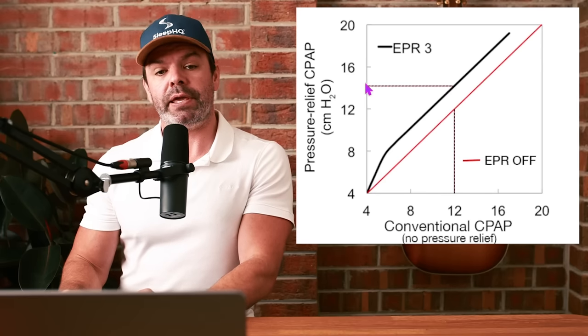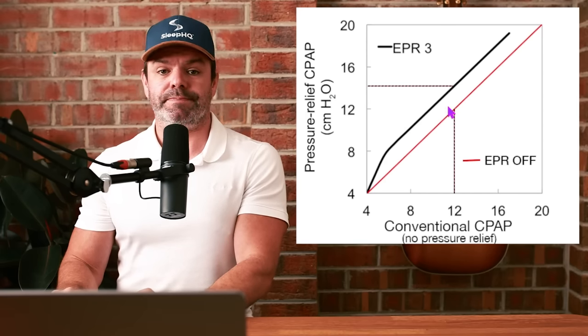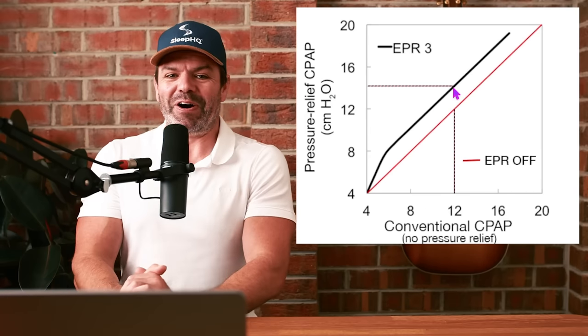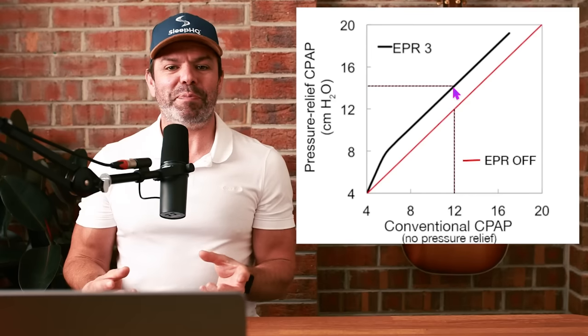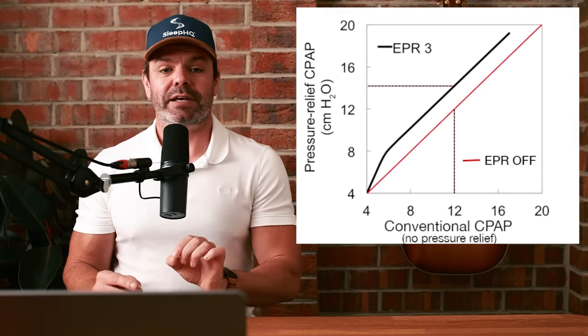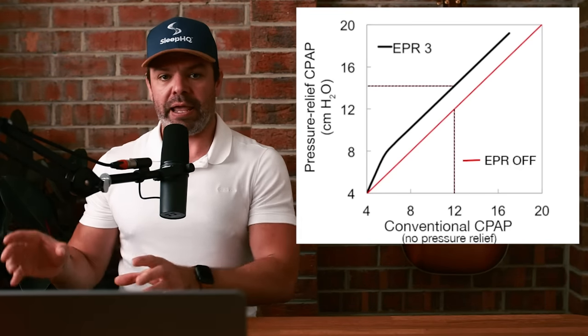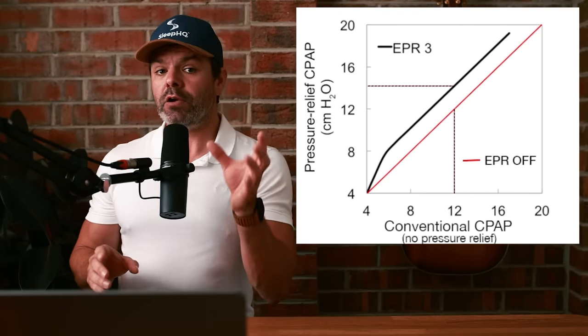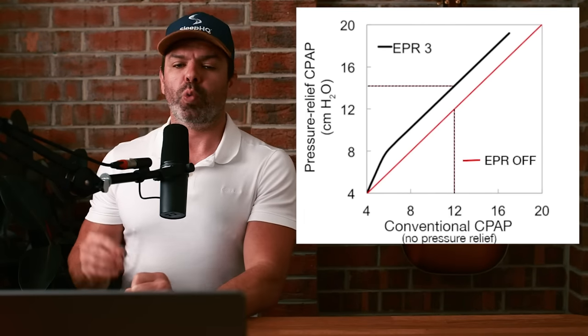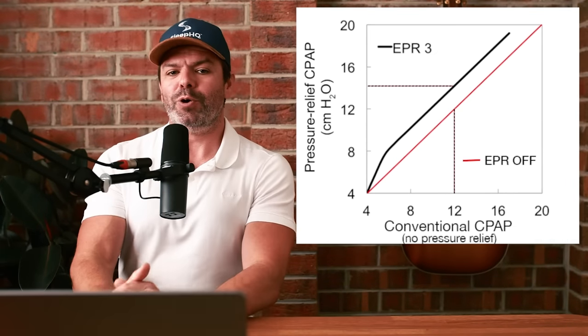If we turn on EPR to a level of 3, the pressure required for apnea control is now up around 14. This is the difference. Now I know what you're thinking: isn't the whole point of EPR to reduce the pressure? Yes it is. However, with ResMed EPR, you cannot have your cake and eat it too. You can't increase comfort with EPR without reducing apnea control. It can't be done.